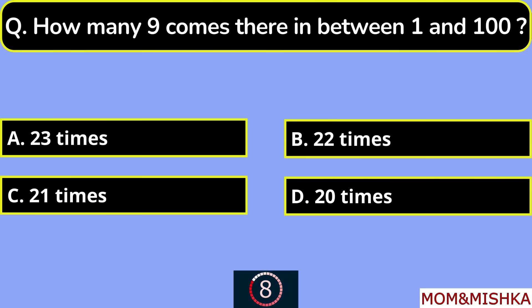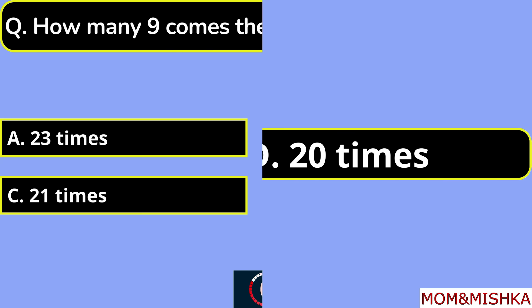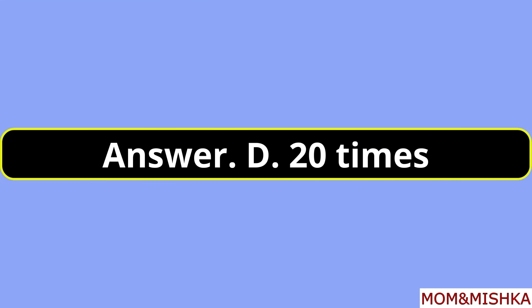How many times does the digit 9 appear between 1 and 100? It appears 20 times. Option D.